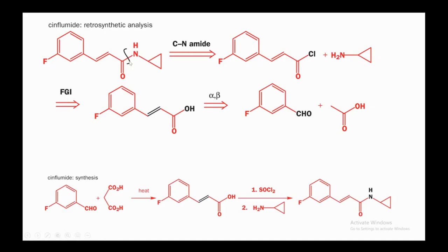Another example with an amide functionality and an alpha,beta-unsaturated compound: first convert the amide by C–N bond disconnection to give acid chloride and amine. Convert acid chloride to carboxylic acid (FGI). Now disconnect the alpha,beta-unsaturated acid — one side becomes aldehyde, the other becomes the acid. Activate the acid with another acid to form an active methylene compound, generate the enolate, react with the aldehyde to form the linkage, then heat to remove the extra acid group. Convert the acid to acid chloride with thionyl chloride, then react with the primary amine to give the target molecule.